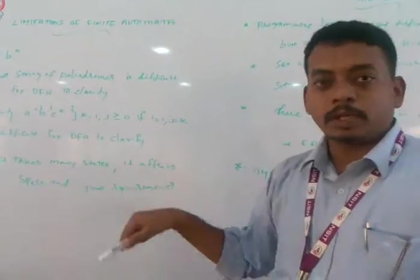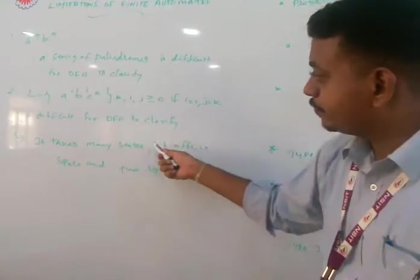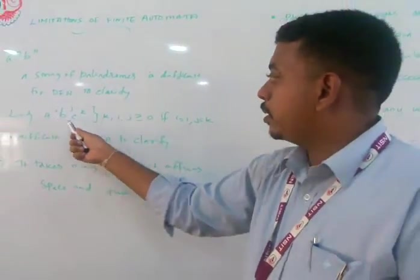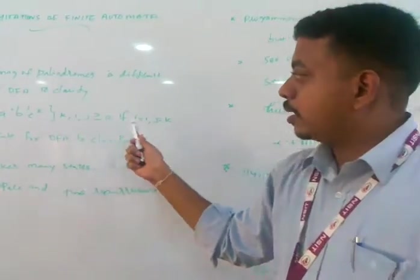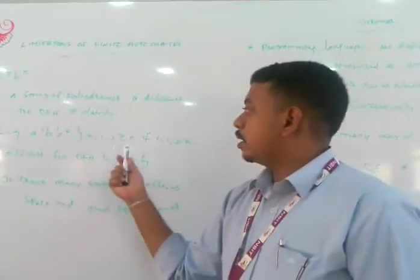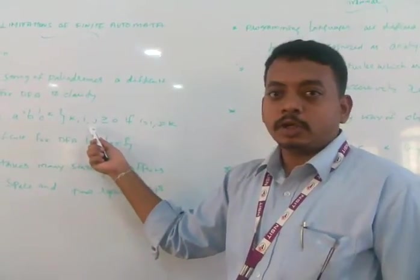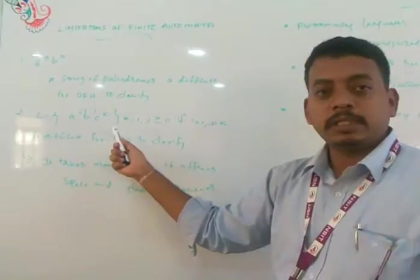The second example is a^i b^j c^k. If you try to draw automata for this language, it is very difficult.